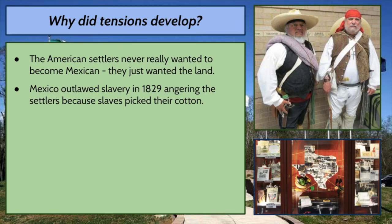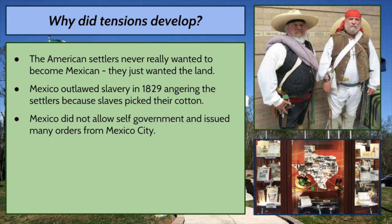Mexico, to its credit, banned slavery — a good moral choice — well before it was ever banned in the United States, but in this particular case it did not make those settlers happy. Most of those settlers were from the American South. Mexico also did not allow much self-government and issued many orders from Mexico City. The settlers came from America where they were used to having elections and local control over their affairs, and Mexico did not allow that, which was a source of quite a bit of tension.